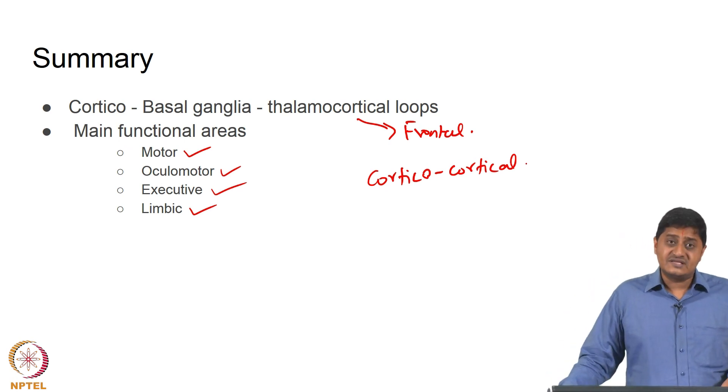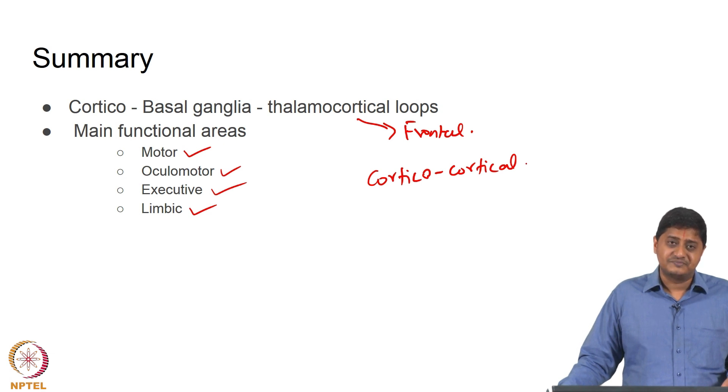Also note, if there is extensive cortico-cortical connectivity between two areas, their projections to the basal ganglia tend to overlap. If there is less cortico-cortical connectivity between two areas, their projections to the striatum overlap less. With this we come to the end of this lecture; we will continue our discussion in future classes. Thank you very much.